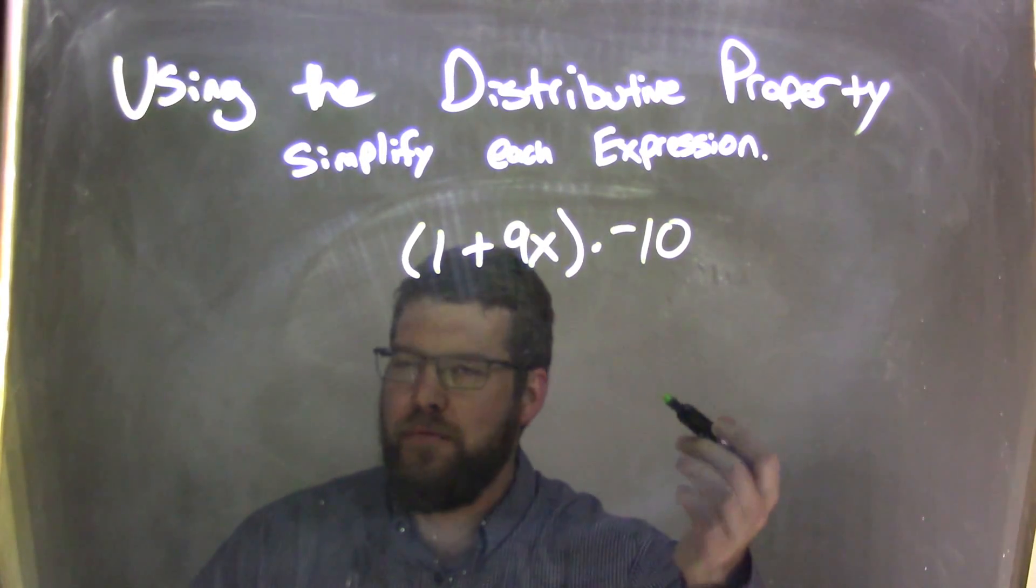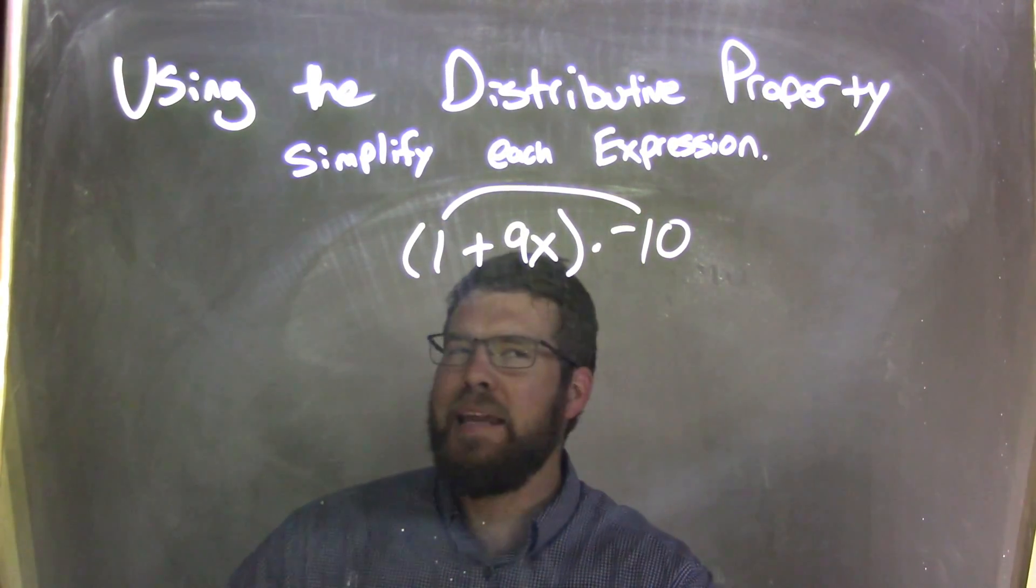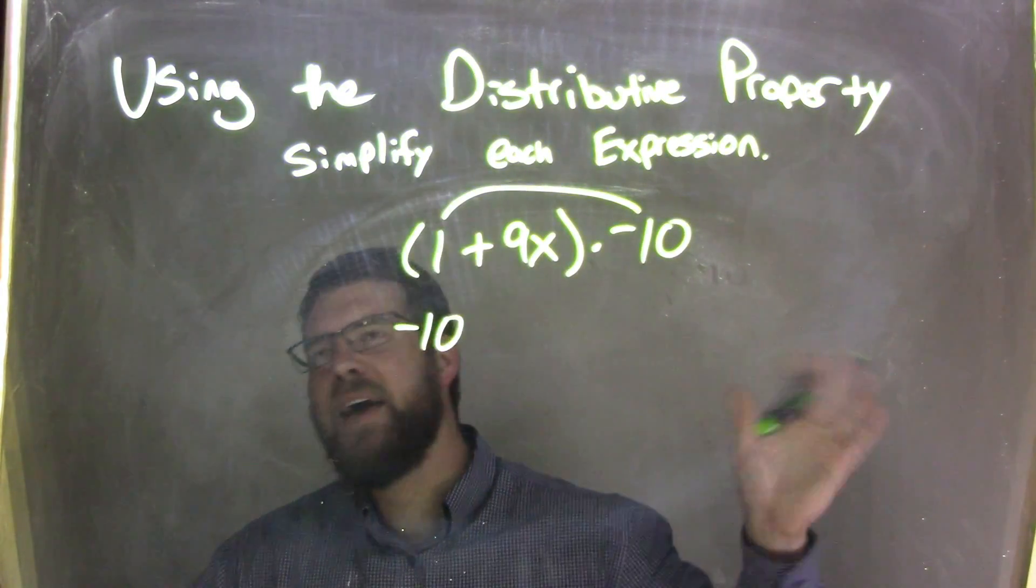So now we have to distribute, right? Hence the video here. Negative 10 goes to multiply by the 1. Negative 10 times 1 is negative 10, right? Because 1 times anything is anything.